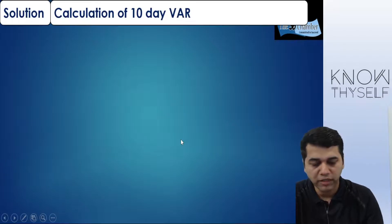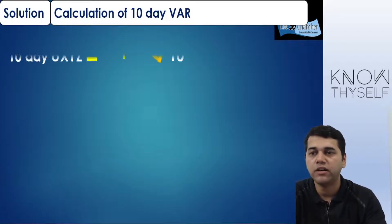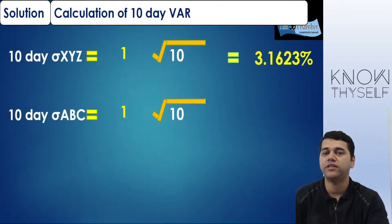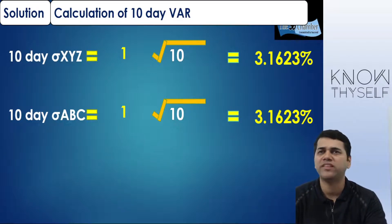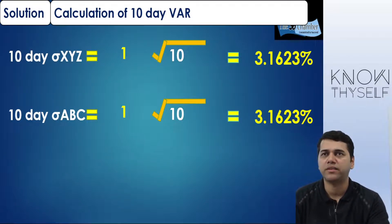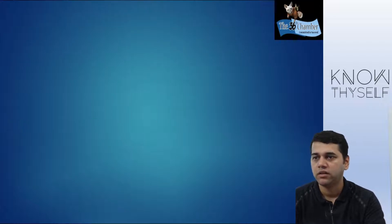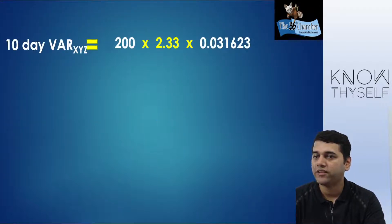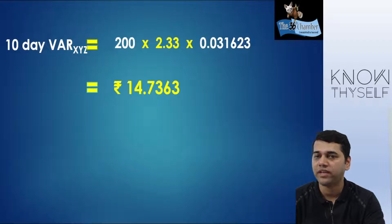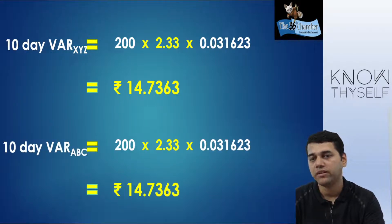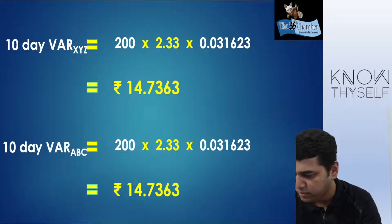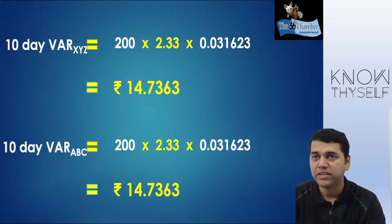For Method 1, I will calculate 10-day VAR individually. 10-day SD = 1% × √10 = 3.1623%. Both stocks have same SD. Then VAR for XYZ = 14.7463 lakhs and VAR for ABC = 14.7463 lakhs. Both are the same because they have the same investment amount, same standard deviation, same confidence level.